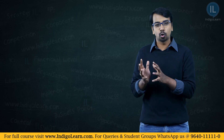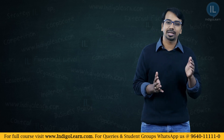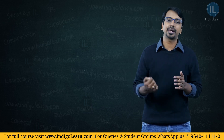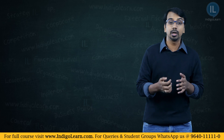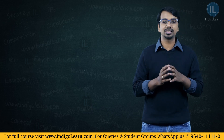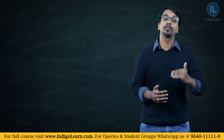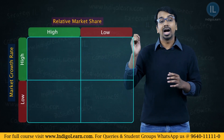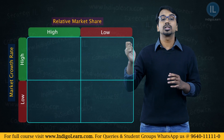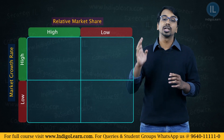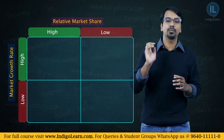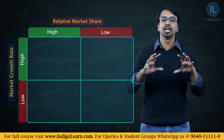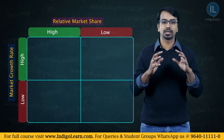The growth we refer to here is what we already understood as part of the product life cycle. In some phases the market growth will be lower, and in some phases the market growth will be very high. So by using these four parameters — high growth, low growth, high relative market share, and low relative market share — we have four boxes to fill.